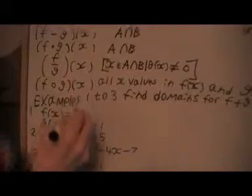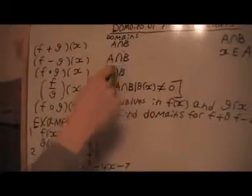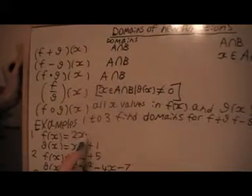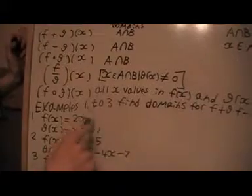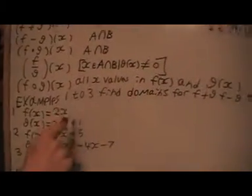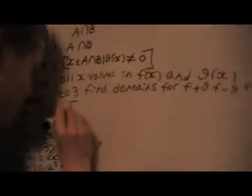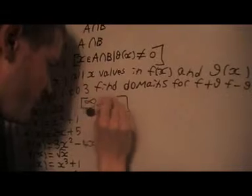So for the first one, the domains for F plus G are all the same according to the rules here. So we'll look at the domains for each one, F of X and G of X, and then find the intersection.